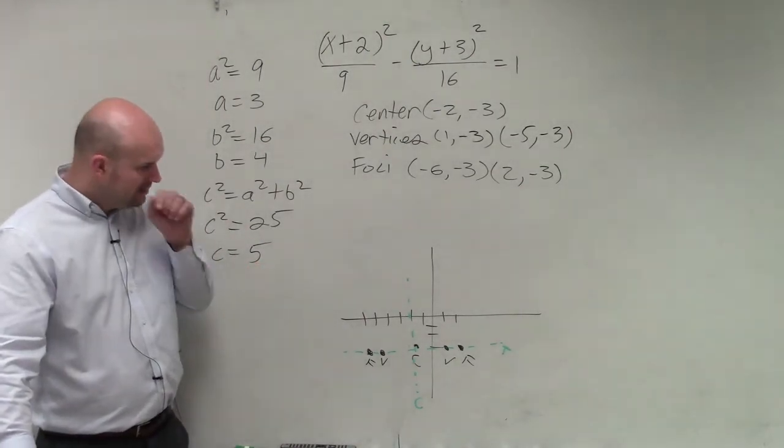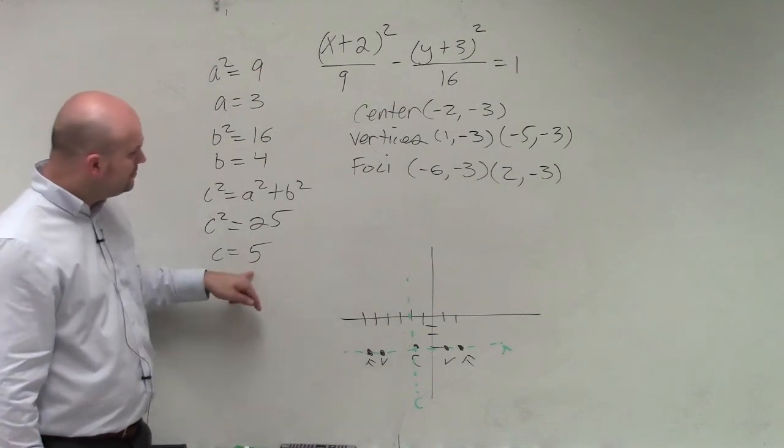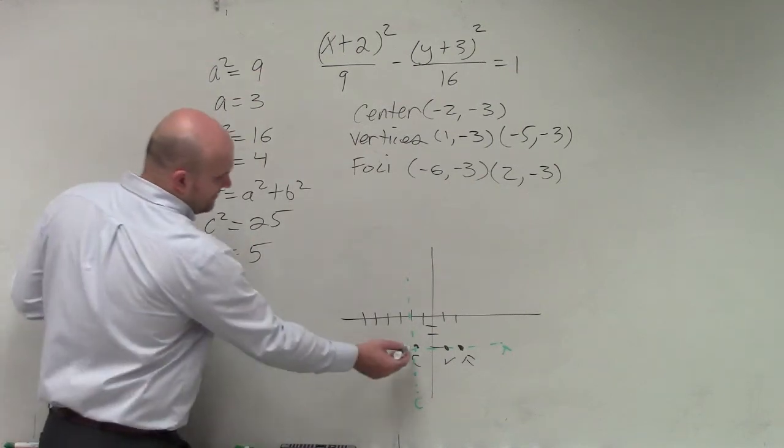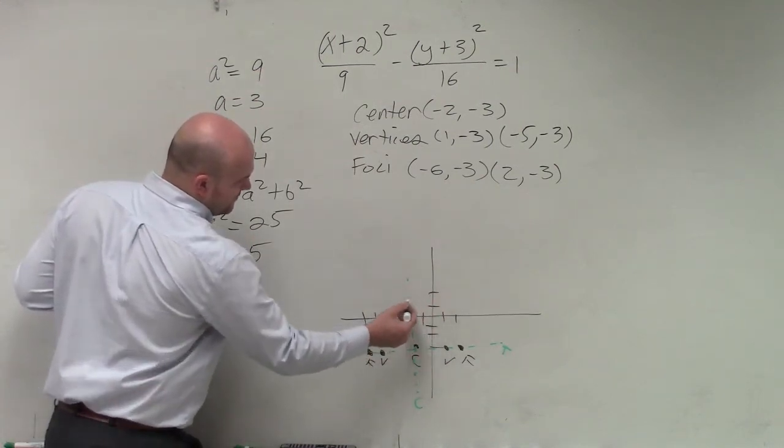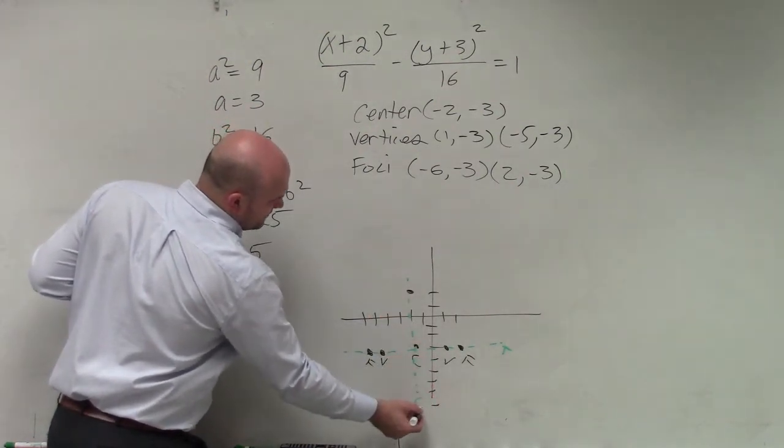If you want to sketch the asymptotes, my covertices are at 5. So 1, 2, 3, 4, 5. And 1, 2, 3, 4, 5.